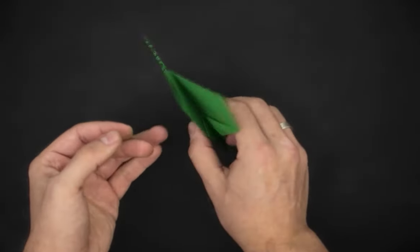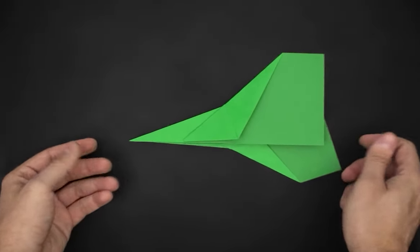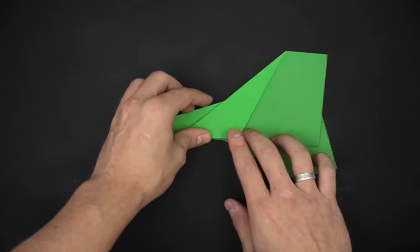Turn it over and repeat the same thing here. Now you can use the other wing as a guide.